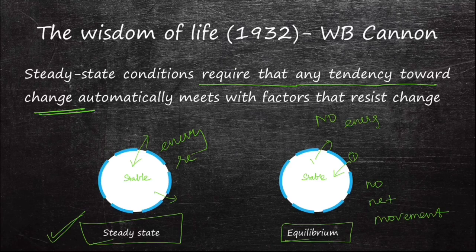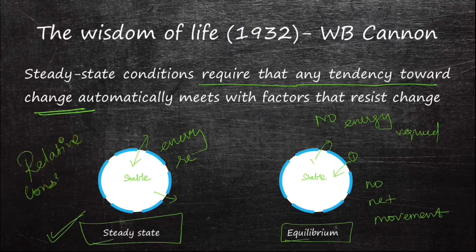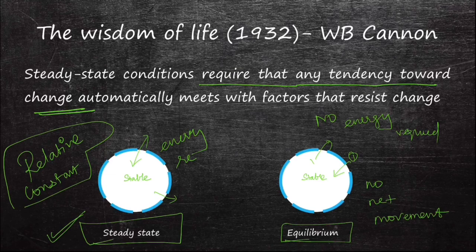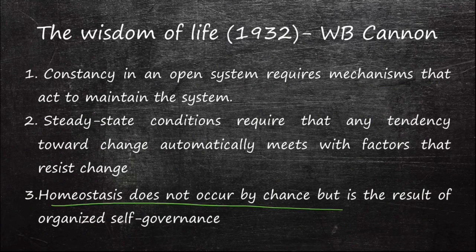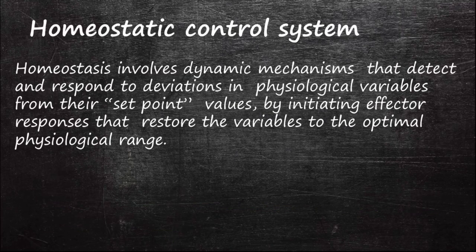Steady state indicates that a variable is kept constant though it is continuously being added to or removed from the system. Maintenance of steady state requires energy and a control system that matches input and output. For example, body temperature is maintained at 37°C by balancing continuous heat production and heat loss. Any maintained variable cannot be exactly constant but is kept within a narrow range — a relatively constant value. Homeostasis is therefore the maintenance of steady state, that is, relatively constant internal physical and chemical conditions in the body, by coordinated physiological control systems.